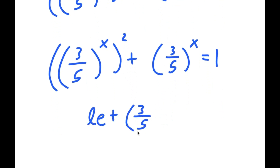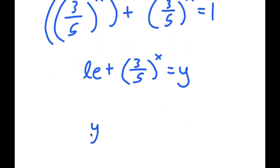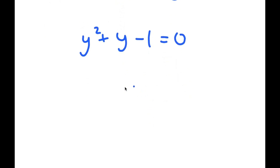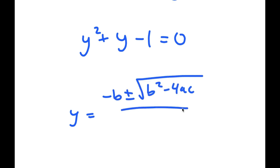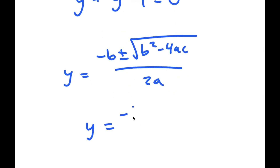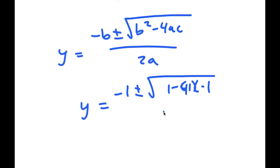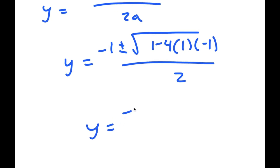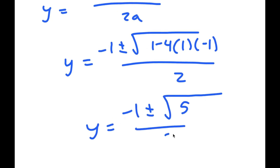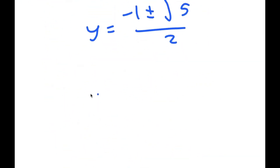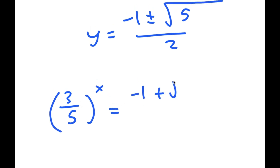I'm going to let 3 over 5 to the power of x equal to the variable y. So now I have y squared plus y minus 1 equals 0. Using the quadratic formula — negative b plus or minus the square root of b squared minus 4ac all over 2a — I get y is equal to negative 1 plus or minus the square root of 1 minus 4 times 1 times negative 1, all over 2, which is equal to negative 1 plus or minus the square root of 5 over 2. Meaning, 3 over 5 to the power of x is equal to negative 1 plus the square root of 5 over 2.